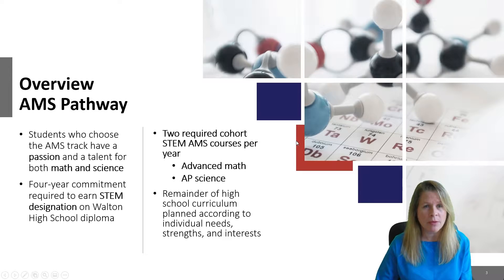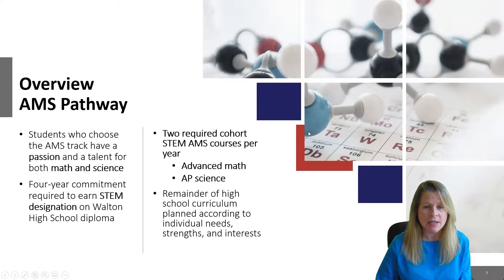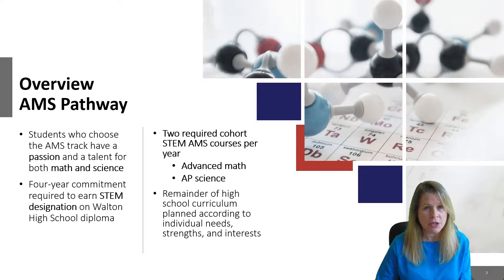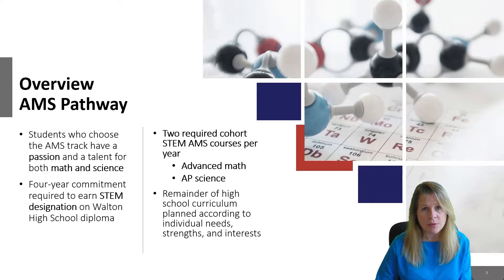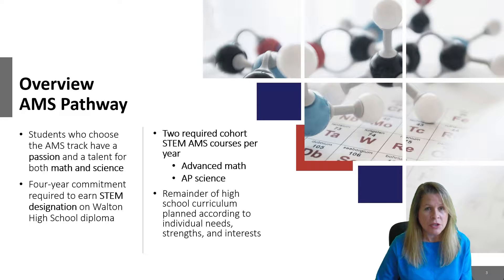Let's get an overview of the AMS pathway. Those students who choose the AMS track need to have a talent and a passion for both math and science. You're making a four-year commitment to the STEM program in order to earn that STEM designation on your diploma, so you really need to have a passion for math and science. You'll have two required classes with your cohort each year, an advanced math class and also an AP science class. The remainder — the other four classes — are flexible and you can choose those according to your graduation needs and your interests.